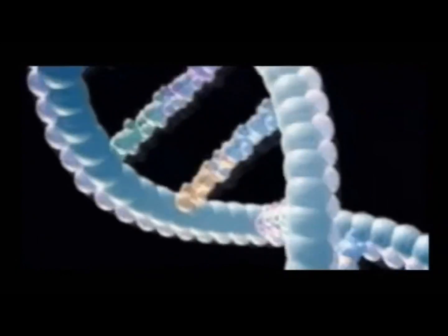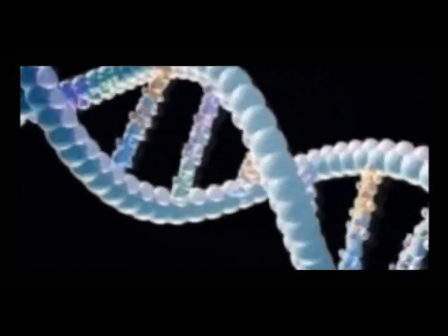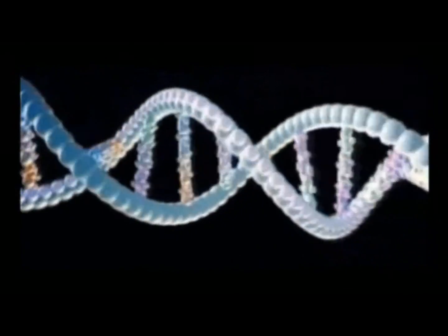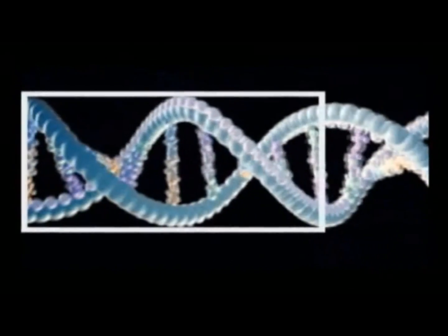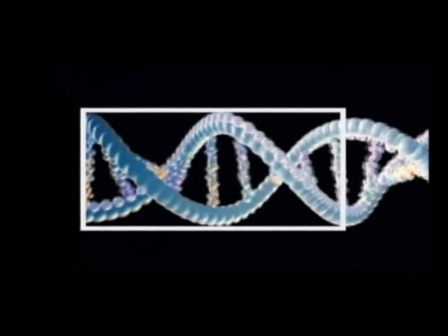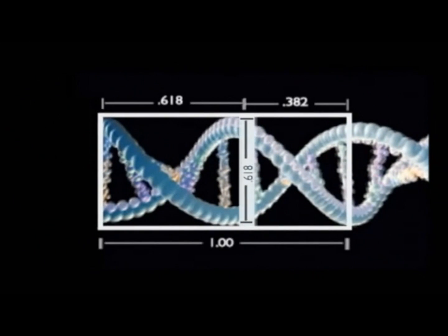The DNA molecule, the code for life, is made up of two intertwining spirals. We find the 0.618 ratio between the helix's width and cycle length.